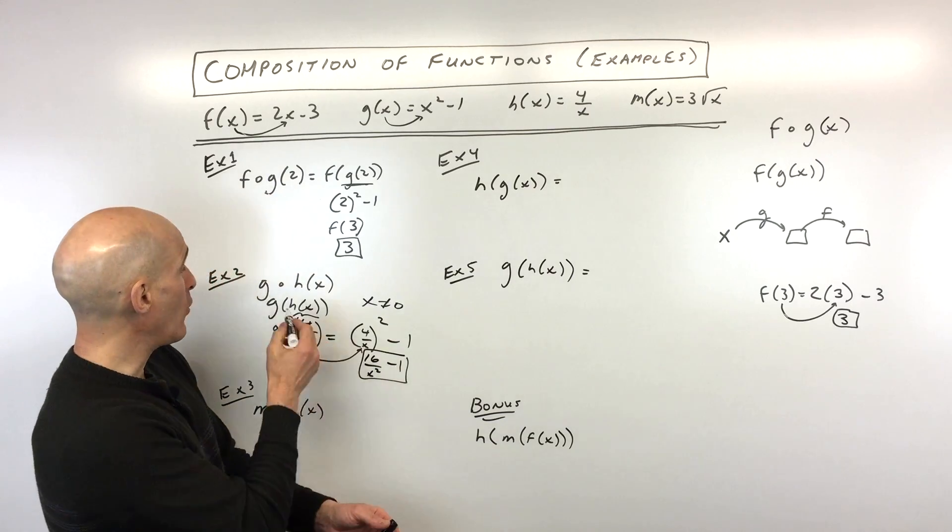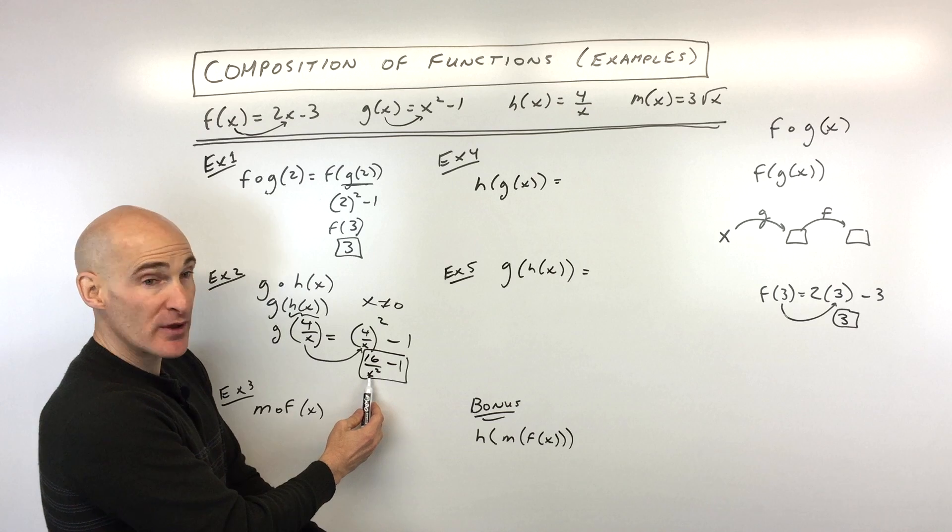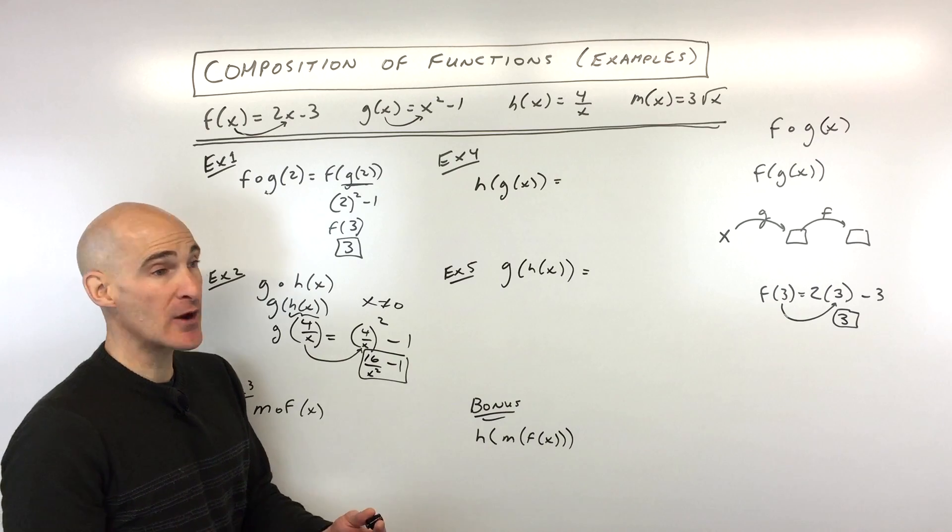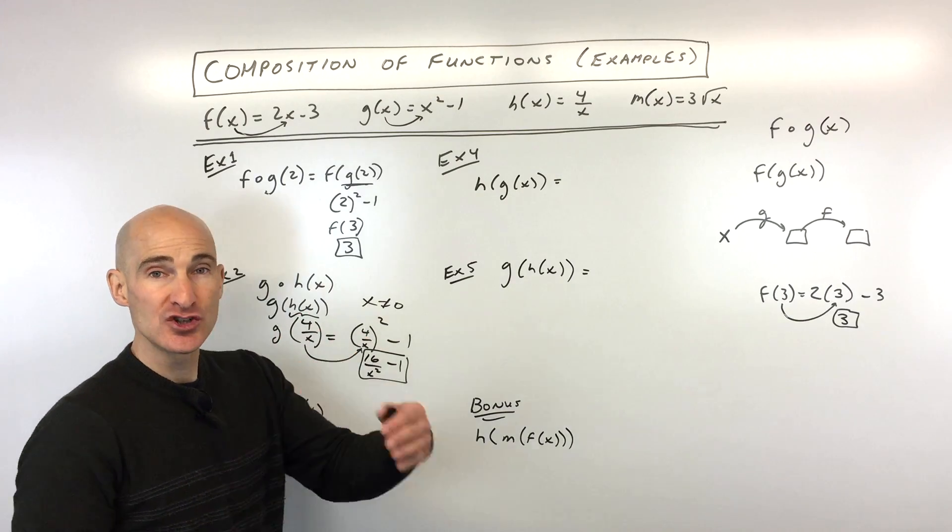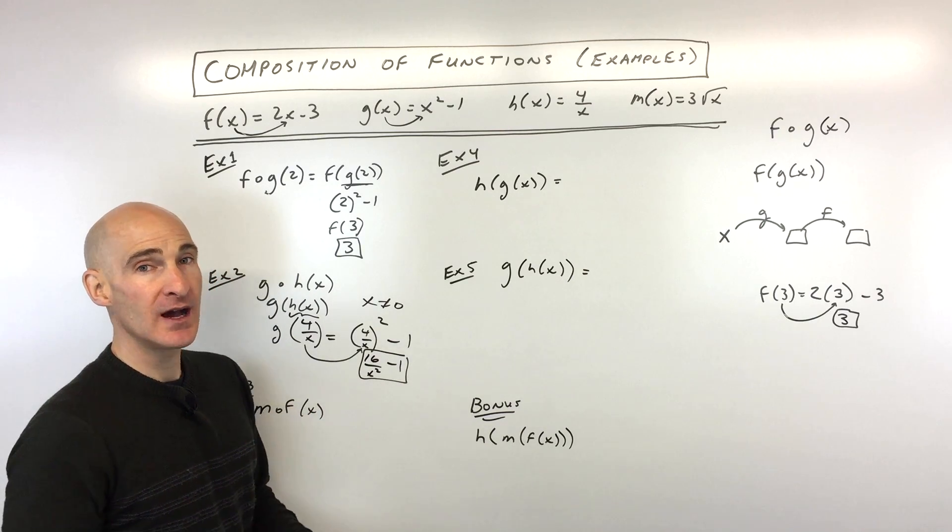So now if you wanted to find out what's g of h of 2, what you could do is just put 2 in place of x here in this final equation, and that's going to give you your end result without having to do it in two steps. So we're basically finding a formula that does that all in one step.